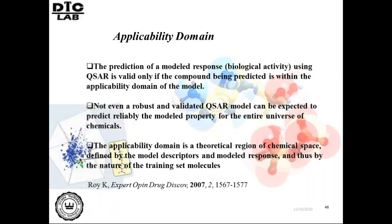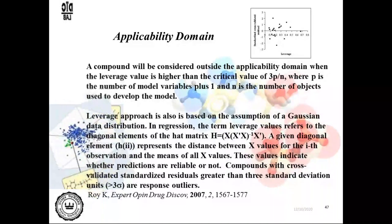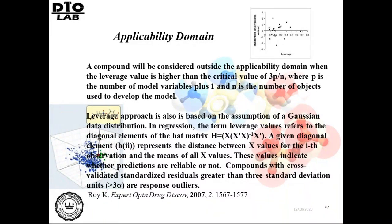Applicability domain is very important for showing the application of a model for prediction of new compounds. One important method is the leverage approach based on the hat matrix, where diagonal elements give hat values. Compounds having leverage values higher than a critical value — 3p/n, where p is the number of model variables plus one and n is the number of objects — are considered outside the applicability domain. If the cross-validated standardized residual is greater than three standard deviations, the compound is called a response outlier.